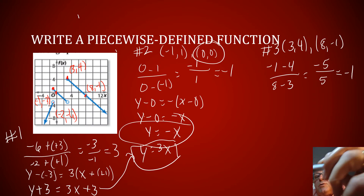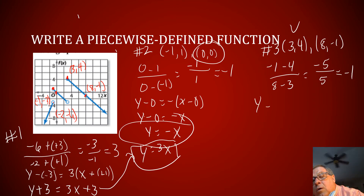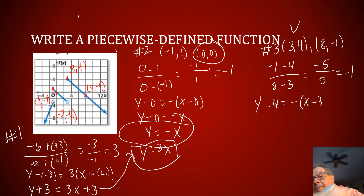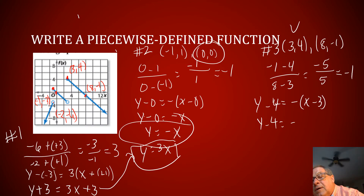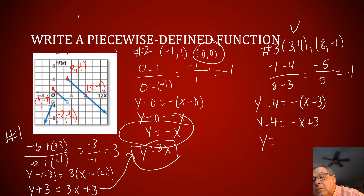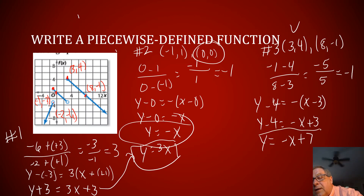I'll use point-slope with the coordinate 3, 4: Y minus four equals negative one times X minus three. That gives Y minus four equals negative X plus three. Adding four to both sides, I get Y equals negative X plus seven. So there are our three equations, but we still need to build in the constraints.